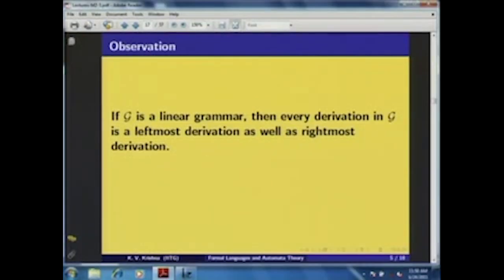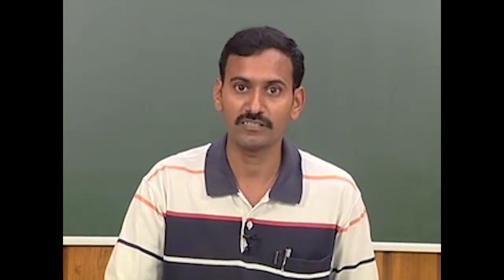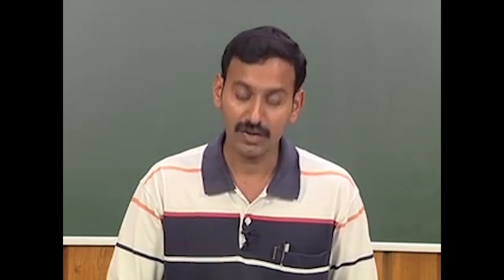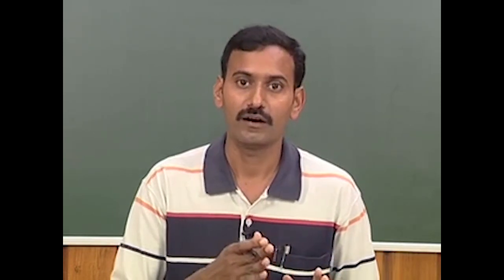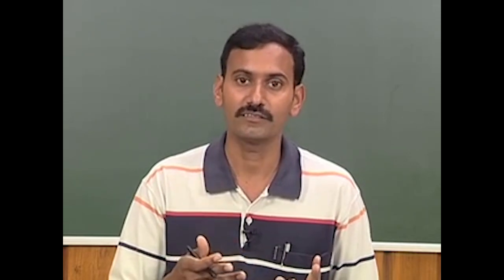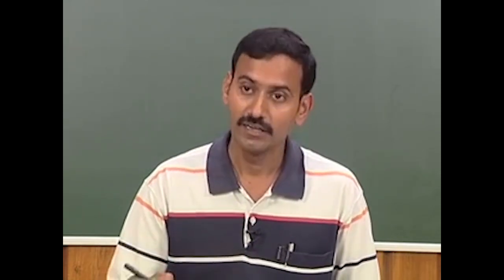You can observe this important point: if G is a linear grammar, then every derivation in G is both a leftmost derivation and a rightmost derivation. The reason is that there is exactly one non-terminal symbol in the sentential form at each internal step in the derivation, since every production rule has at most one non-terminal symbol on its right-hand side. Thus, the only non-terminal available is simultaneously the leftmost and rightmost non-terminal.